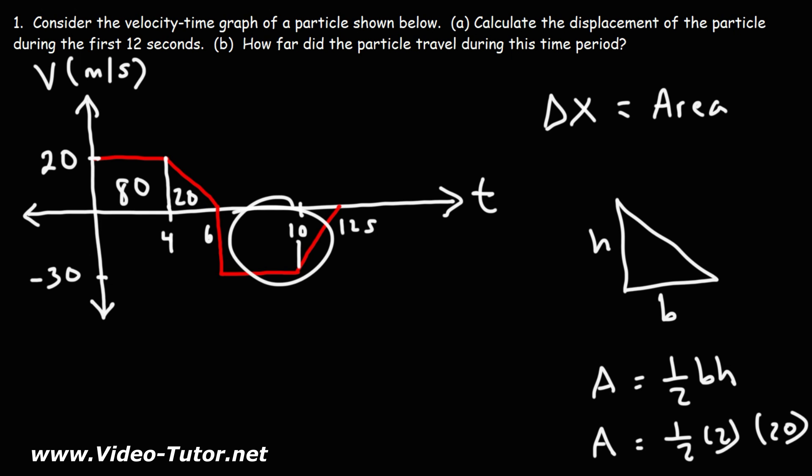Now here we have a rectangle. This rectangle has a width of 4. 10 minus 6 is 4. And it has a height of negative 30. So negative 30 times 4 is negative 120. The reason why it's negative is because it's below the x-axis. Now this is 12 seconds, not 125. So that's an S. The time is in seconds.